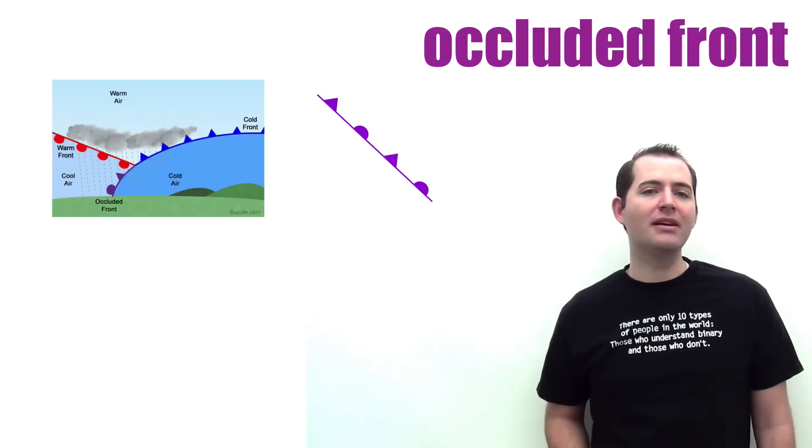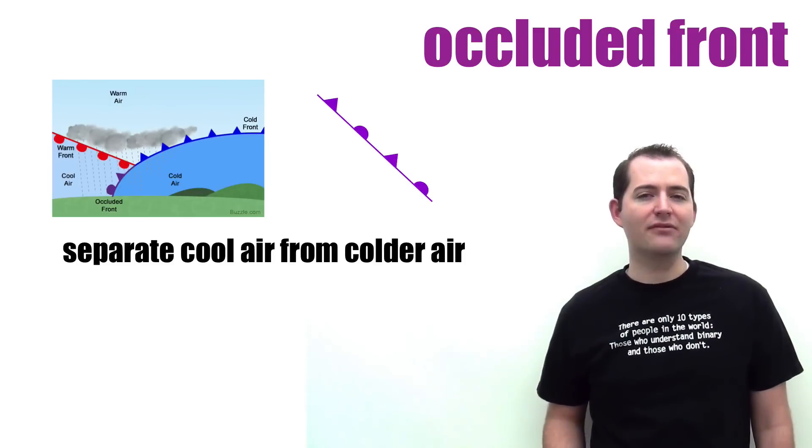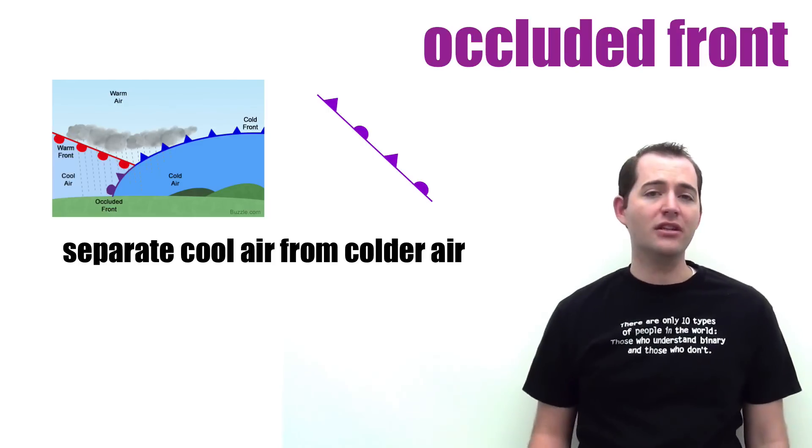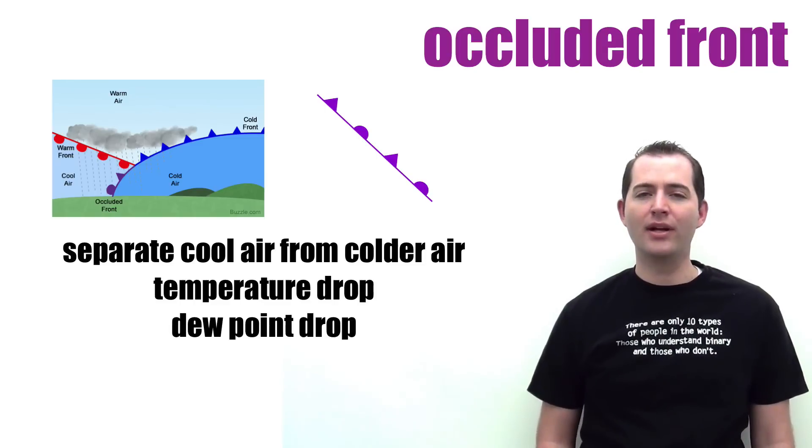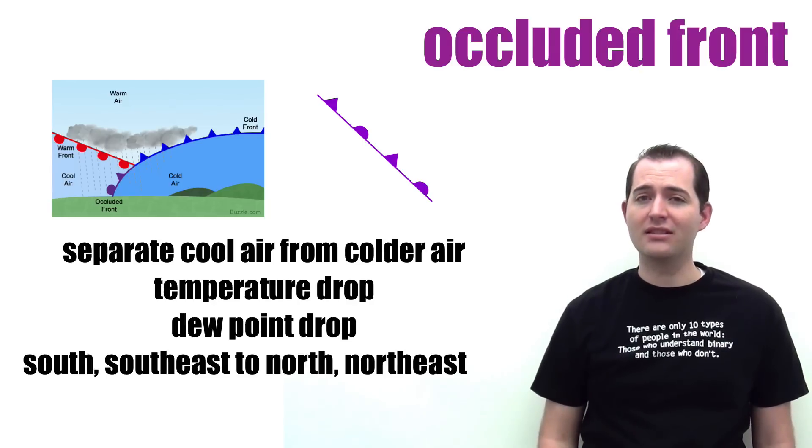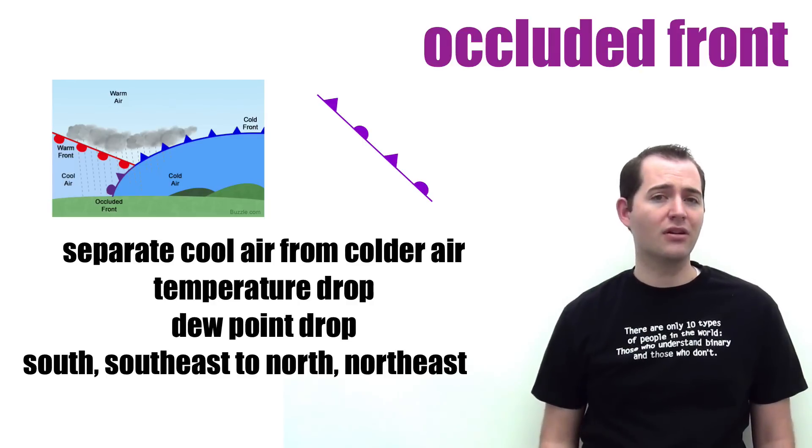An occluded front typically separates the cool air in front of the warm front and the new colder air behind the cold front. When an occluded front passes over an area, the temperature and the dew point will usually drop, and the wind direction will usually change from south or southeast to north or northeast.